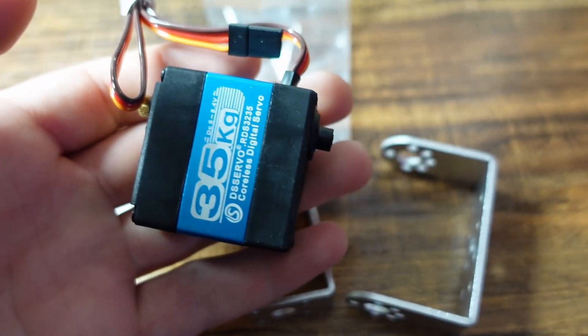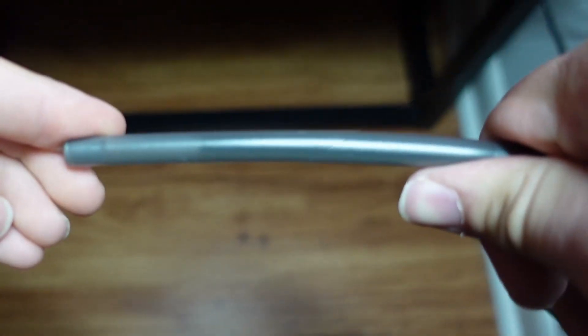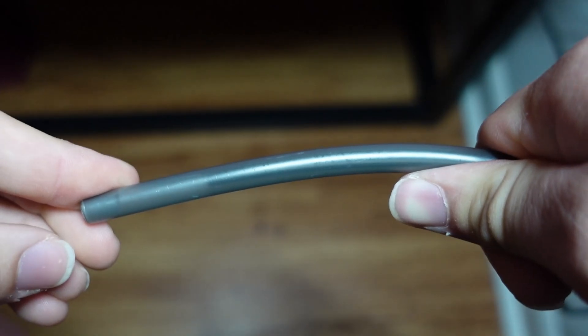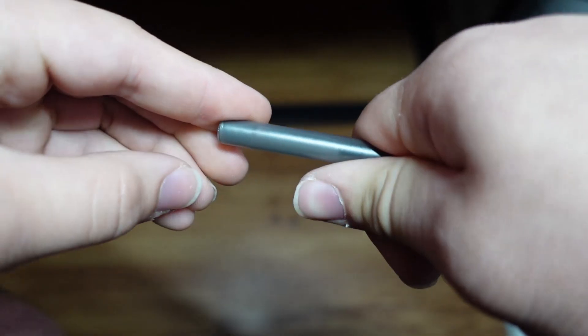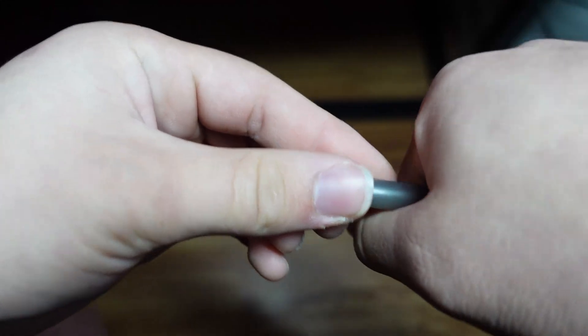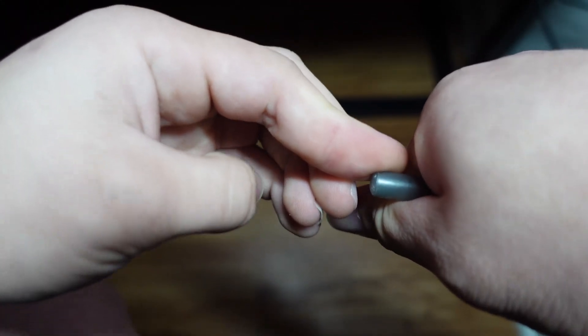As anyone who's ever snapped a stick in half will know, the further away two loading points are, the easier it is to bend or break. Just try bending a pen or pencil by hand from the very ends and then put your hands as close as possible and try it again. A shorter pencil is much more difficult to bend because you can't get any real leverage.